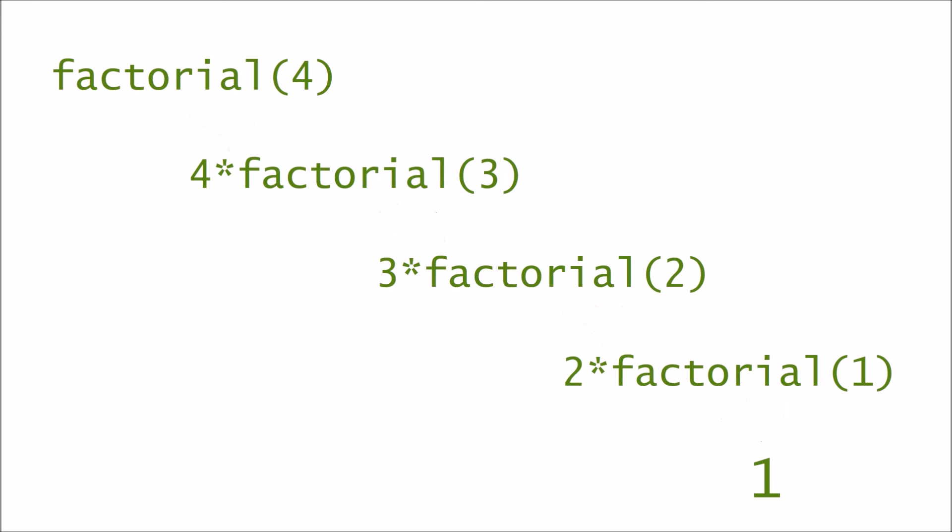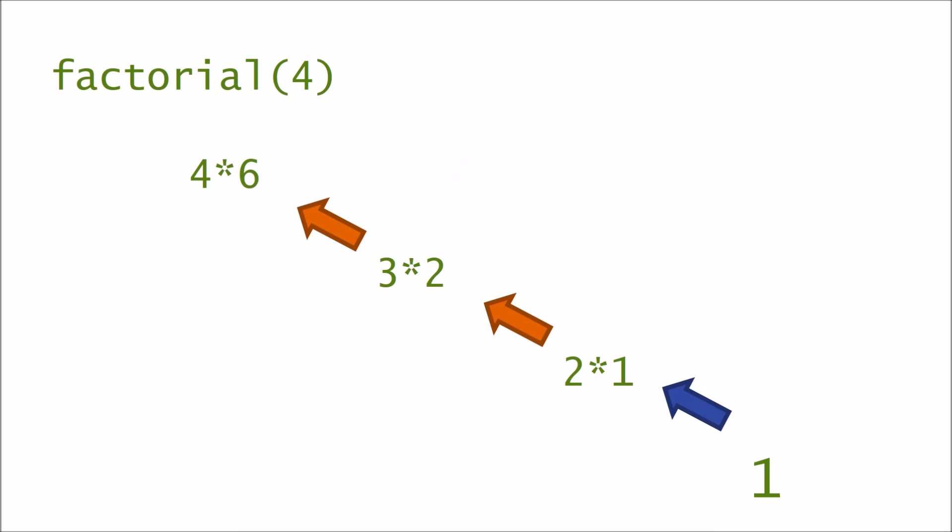Now we can work backwards. We know that the factorial of 1 is 1. So we can work out that the factorial of 2 is 2. The factorial of 3 is 6. Finally, the factorial of 4 is 24.